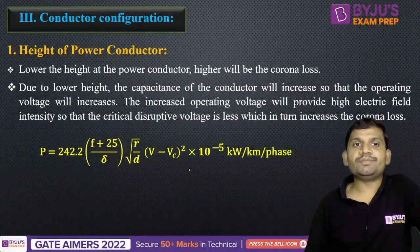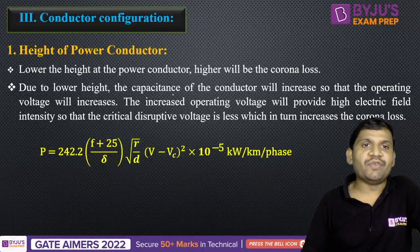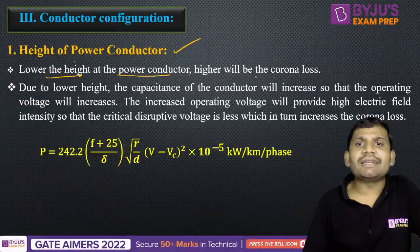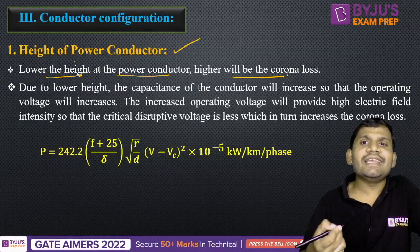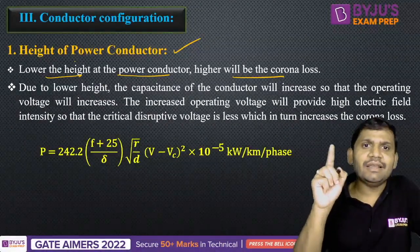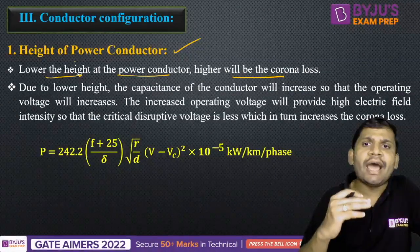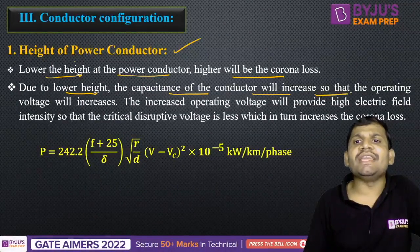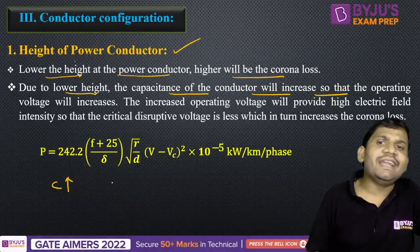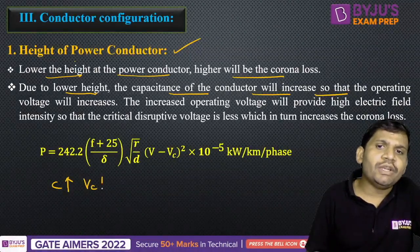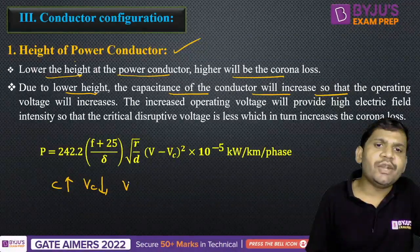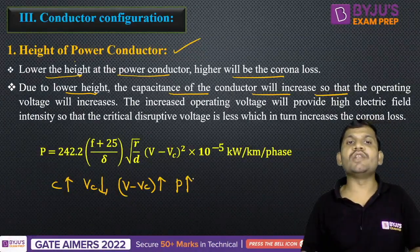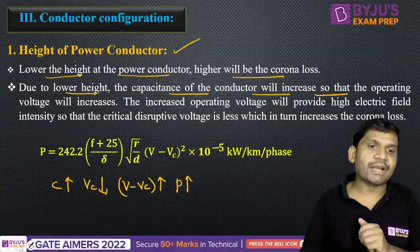Next, conductor configuration. One factor is the height of the power conductor. Lower the height of the power conductor, higher will be the corona loss. That is why we maintain transmission lines at more height. Due to lower height, the capacitance of the conductor increases. Once the capacitance increases, the critical disruptive voltage reduces. Once V minus Vc increases, the power loss also increases.